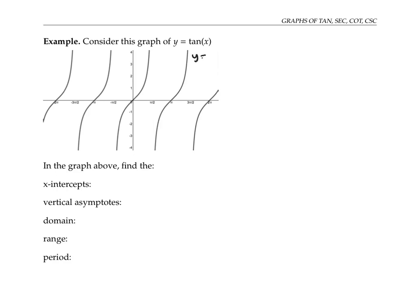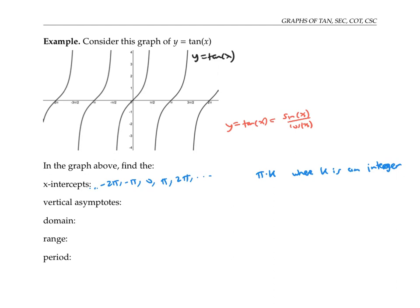In this graph of y equals tan x, notice that the x-intercepts are at values of x of the form negative two pi, negative pi, zero, pi, two pi, etc. You can write that as pi times k, where k is an integer — that is, a positive or negative whole number or zero. This makes a lot of sense because tangent of x is sine of x over cosine of x. So you get x-intercepts, where y is zero, which is where the numerator is zero, and sine x is zero at values of the form pi, two pi, and so on.